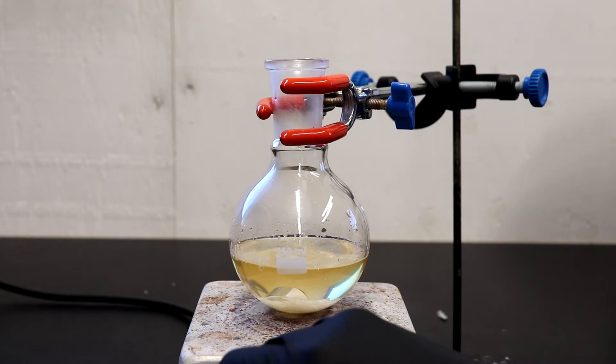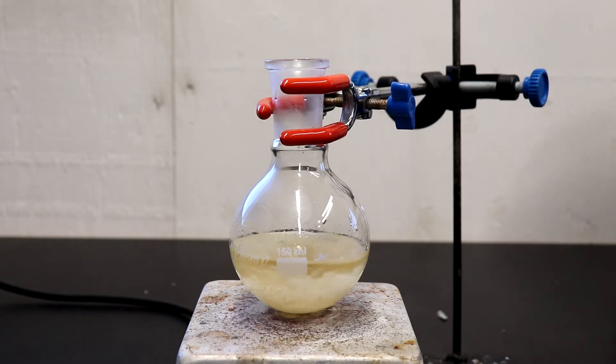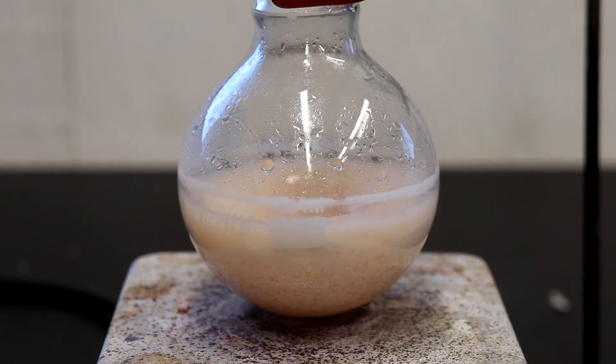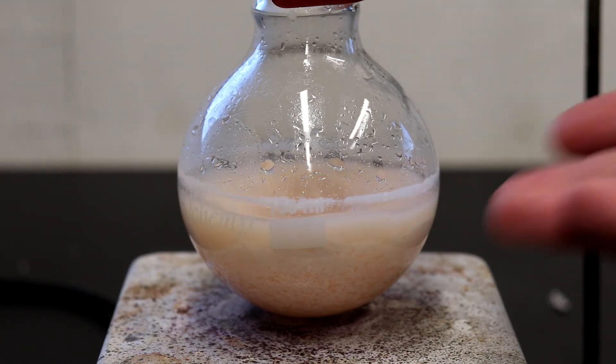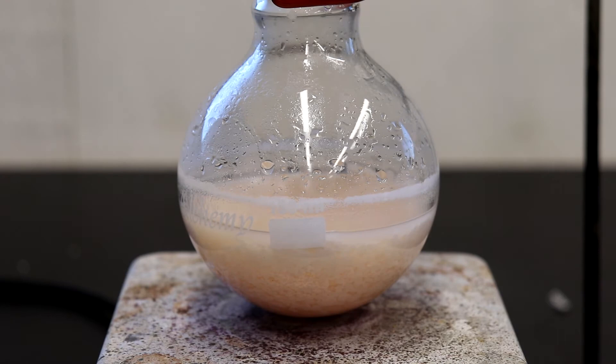And we're going to turn on stirring and we'll let this stir for 30 minutes. So you can see all those flakes of potassium hydroxide have broken up and now we just have a suspension. So I'm going to turn off stirring. It's also gone a slight pink color and we're going to filter this.